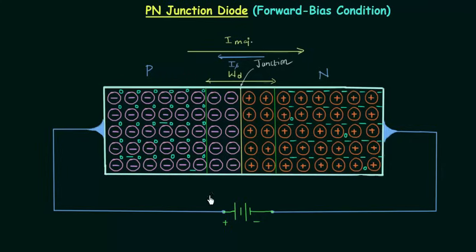Because of this, the holes on the P side will be repelled, since holes are positively charged and are the majority charge carriers on the P side. The positive terminal of the battery will repel the holes towards the depletion layer, and similarly the negative terminal will repel the electrons towards the depletion layer, because electrons are negatively charged. Thus, the forward bias potential Vd will pressure the electrons on the N side and holes on the P side to recombine with the ions near the boundary and reduce the width of the depletion region.